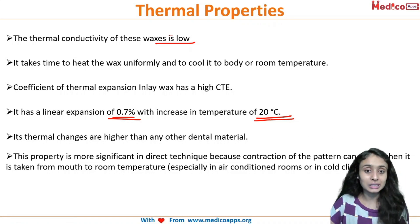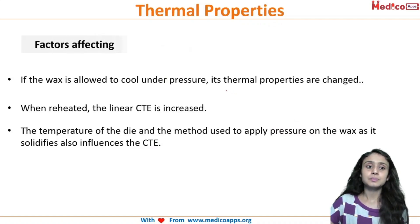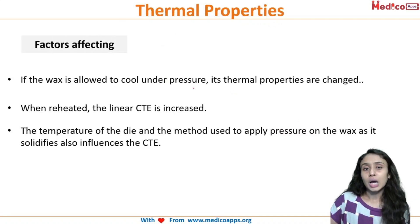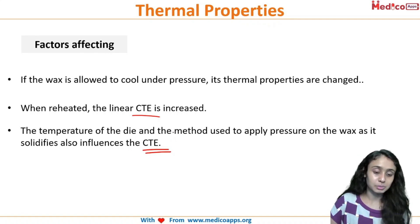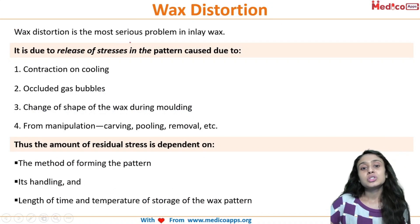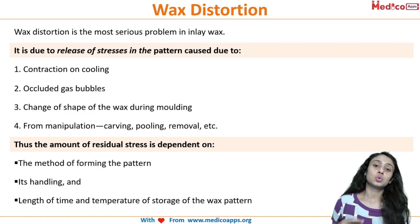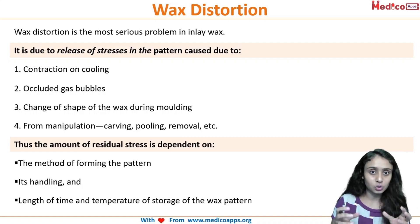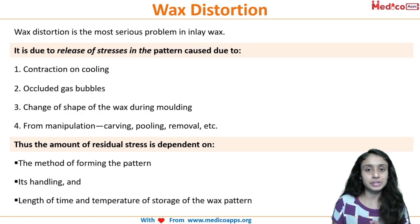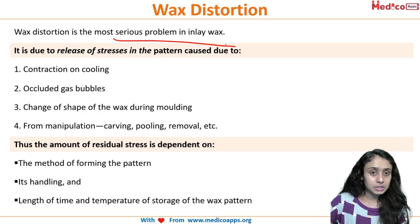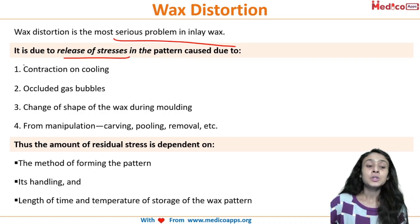If the wax is allowed to cool under pressure, its thermal properties are changed. When reheated, the linear expansion is increased. The temperature of the die and the method used to apply pressure on the wax as it solidifies tends to influence the thermal properties. Wax distortion is the most serious problem in inlay wax. Distortion refers to any deformity in the wax — once you have prepared your pattern and completed carving, any difference or deformation is called wax distortion.